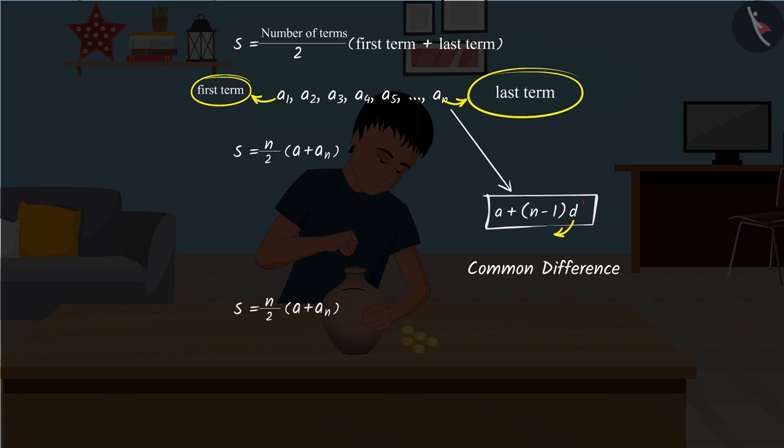If we substitute the value of an in this formula, we get this formula, which represents the sum of the first n terms of the arithmetic progression whose common difference is d.